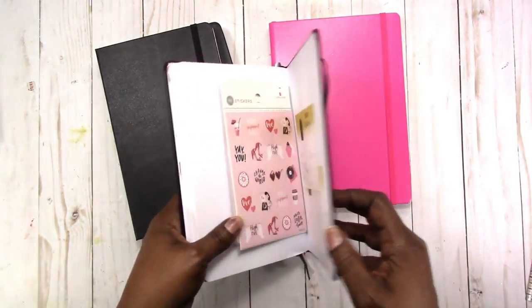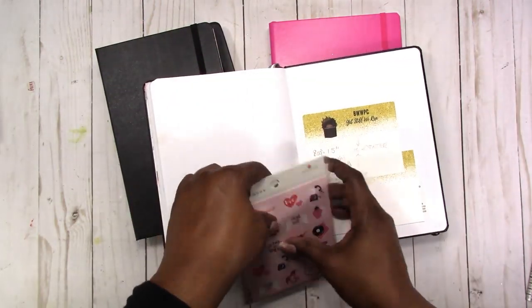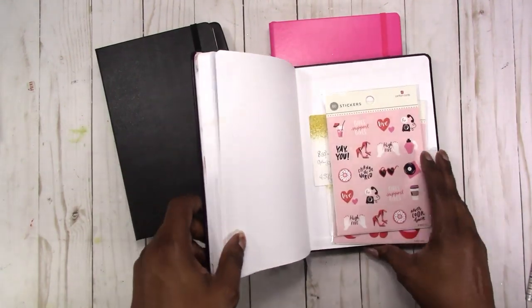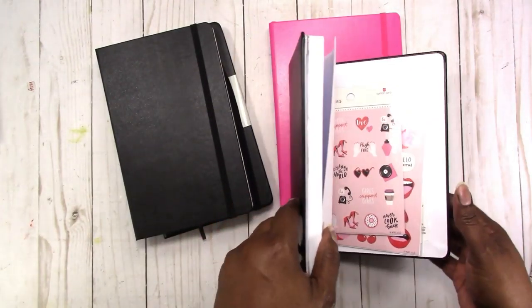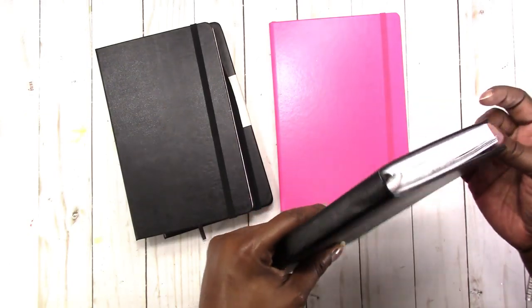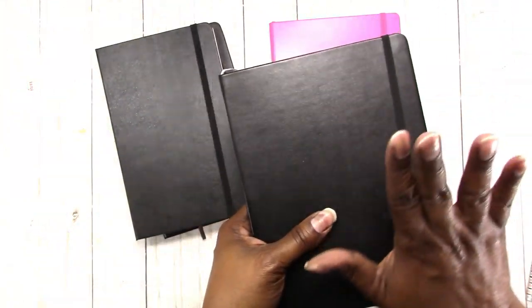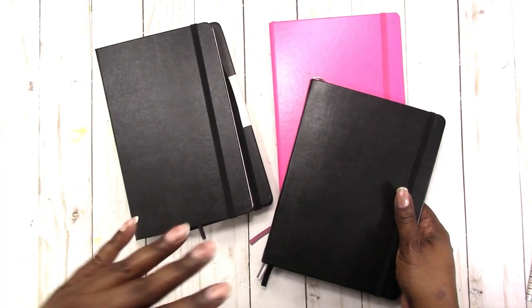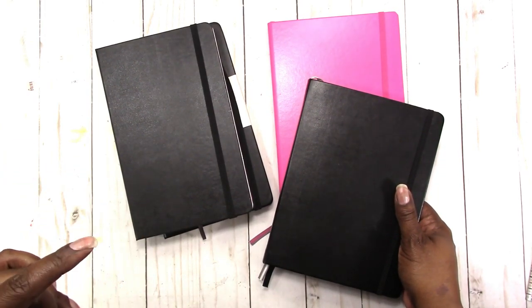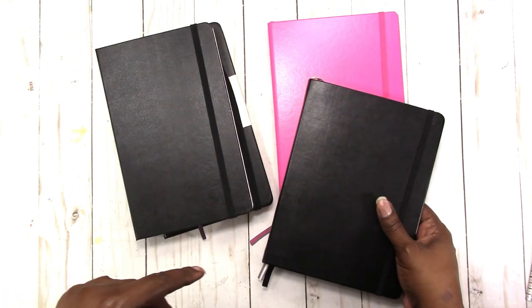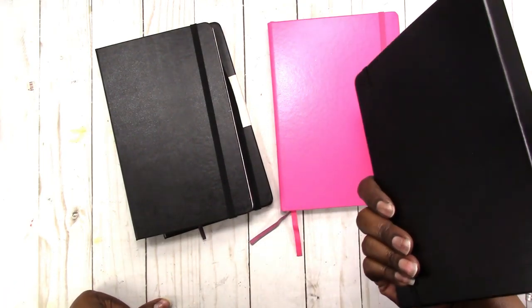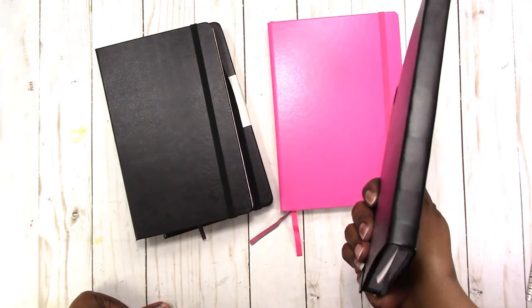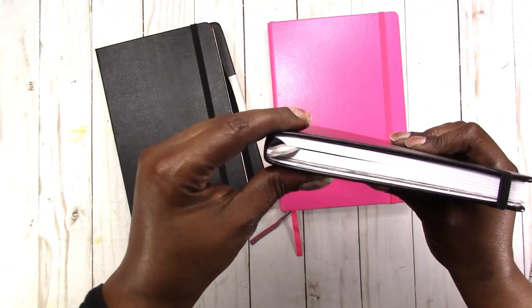For my index space, it does not have a pocket in the back, so I'm just sticking things in there to use later. That is the Michaels journal. They do have other colors, of course - they have lined, blank, and grid options available also. They are, if I remember correctly, five dollars.